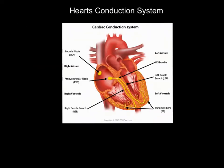Questions on how the heart controls the rate at which it beats, or how the heart produces a heartbeat, have typically been three to four marks. So let's have that as our absolute start point — these questions are typically three to four marks, meaning we've got to say three to four things on this topic.